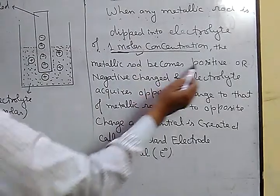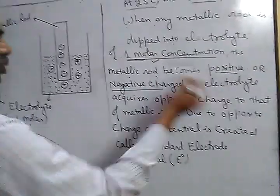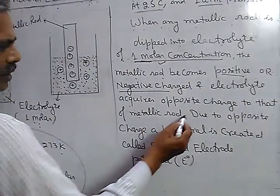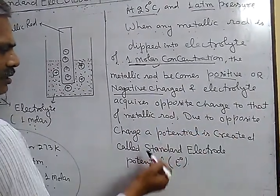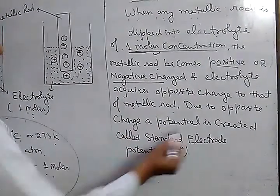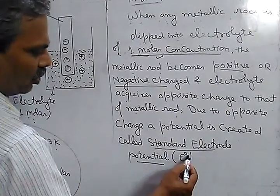The metallic rod becomes either positive or negative charge, and the electrolyte acquires opposite charge to that of the metallic rod. Due to this opposite charge, a potential is created. This is called standard electrode potential, represented by E0.